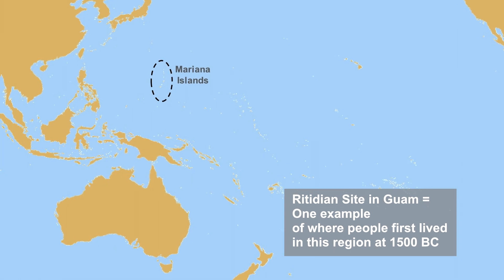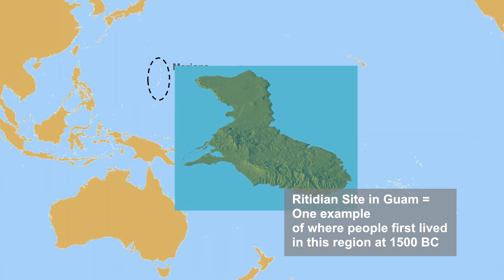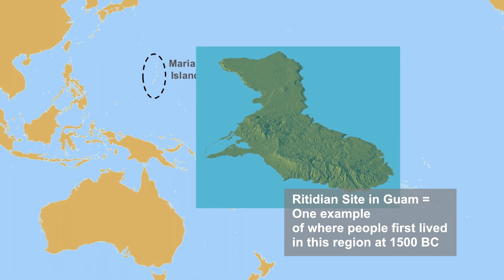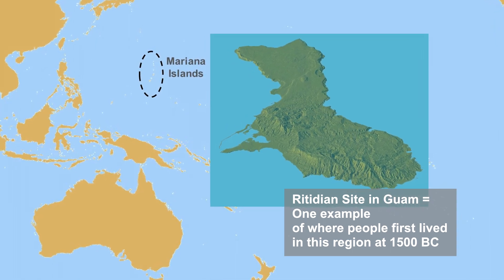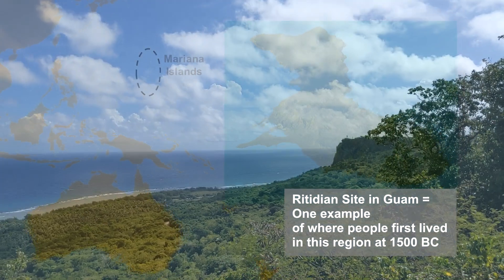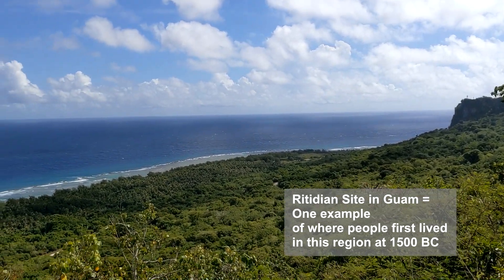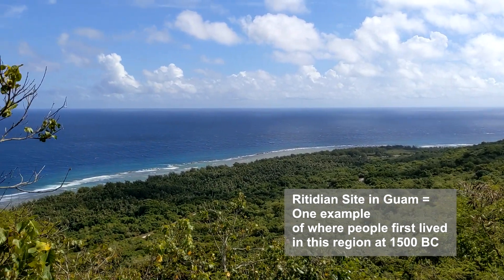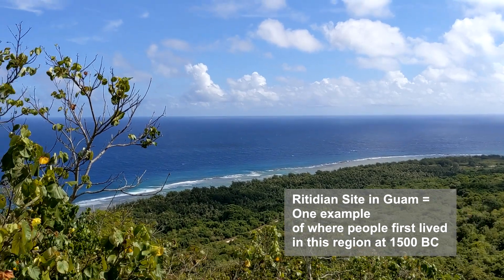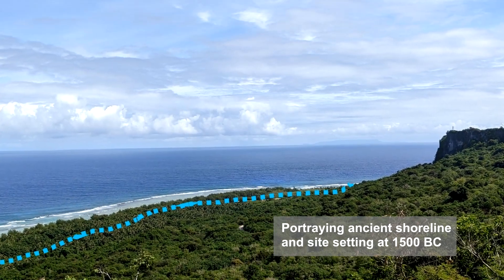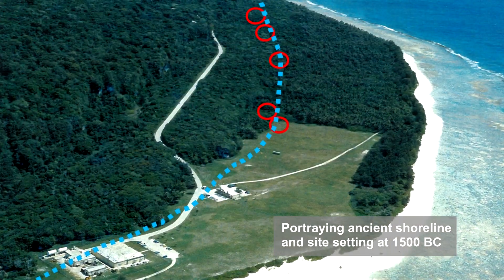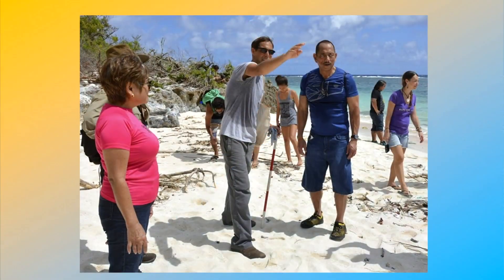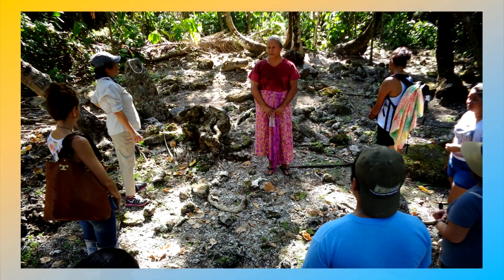In many cases, one particular ancient time period can be of special interest for the public. For example, people may want to learn about the specific time when people first lived in a region, such as represented in the deeply buried layers at the Ritidian site of Guam National Wildlife Refuge. Visitors can access the refuge today and appreciate seeing where people first lived here around 1500 BC. Visitors can visualize the ancient landscape and consider how this place changed through time, eventually supporting the setting with the surface-visible sites and the holistic ecosystem of the refuge today.